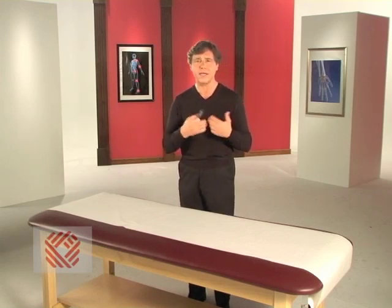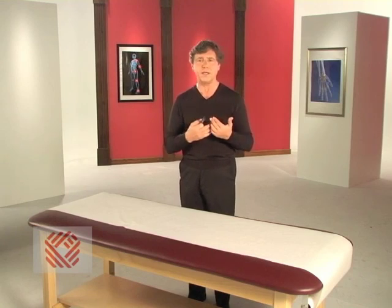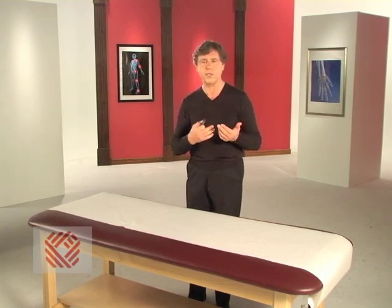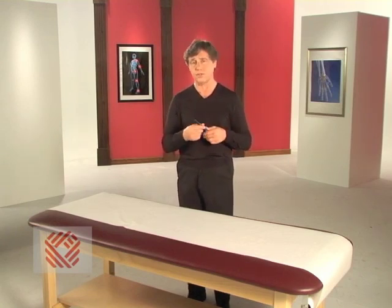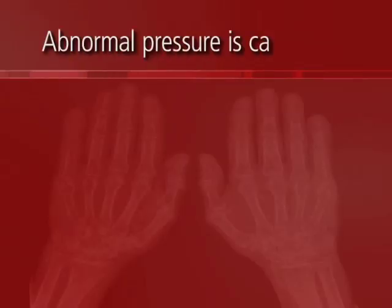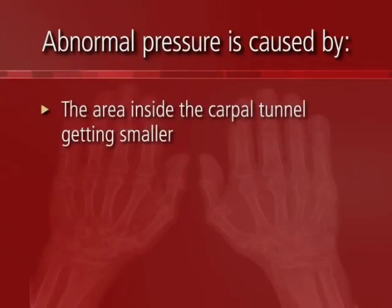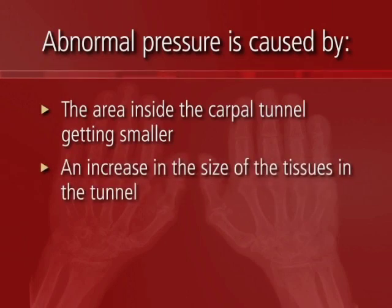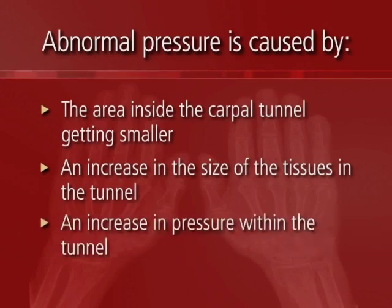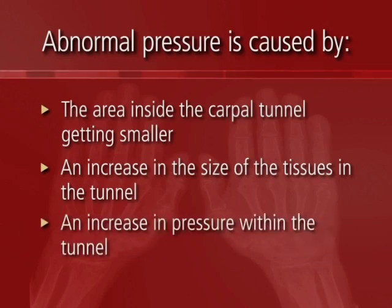The carpal tunnel can't expand, so any problems that cause abnormal pressure in the tunnel can produce carpal tunnel syndrome. Abnormal pressure is caused by making the tunnel smaller or by increasing the contents in the tunnel while it stays the same size, or by an increase in pressure within the carpal tunnel itself, which reduces blood flow to the nerve and causes a loss in nerve function.